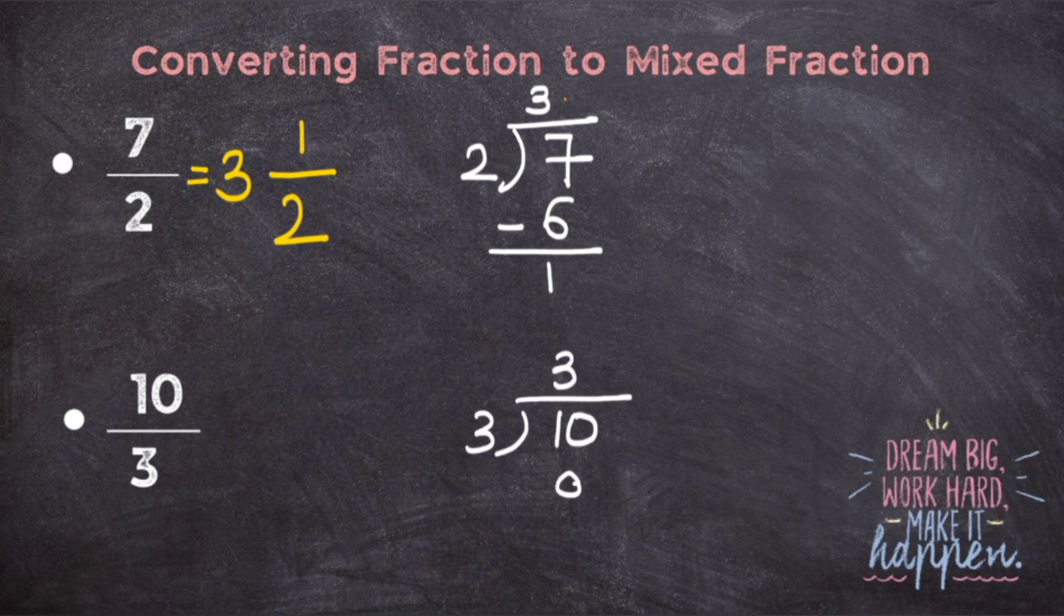Which will be 3 times 3 is 9, minus 1. So the mixed fraction for 10 upon 3 will be first quotient which is 3, then the remainder which will be 1, and the divisor which is 3.